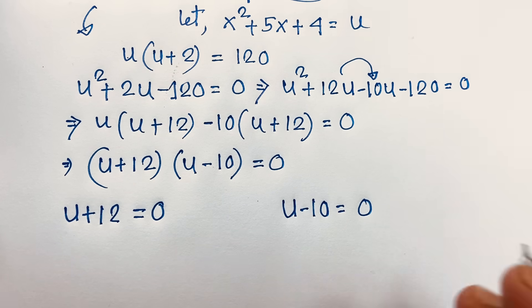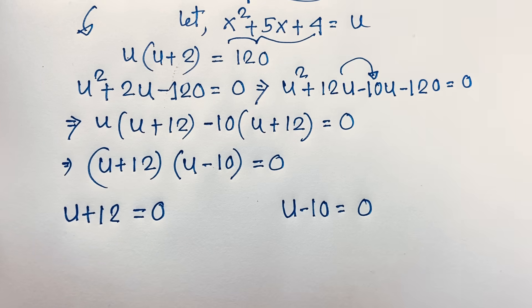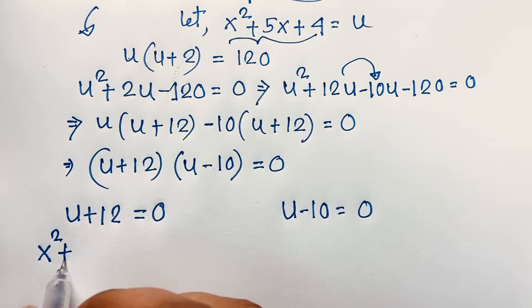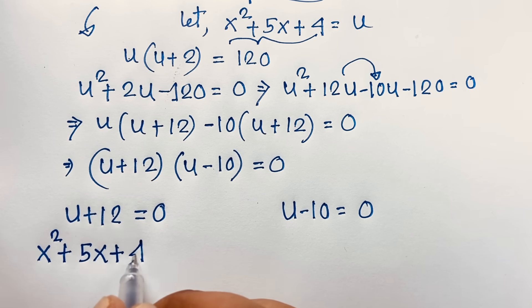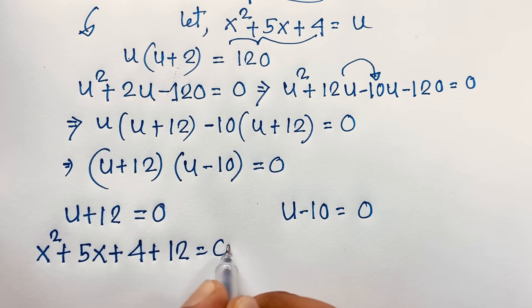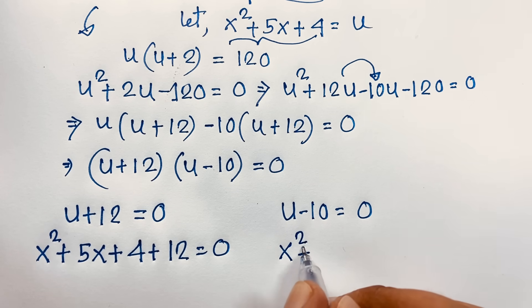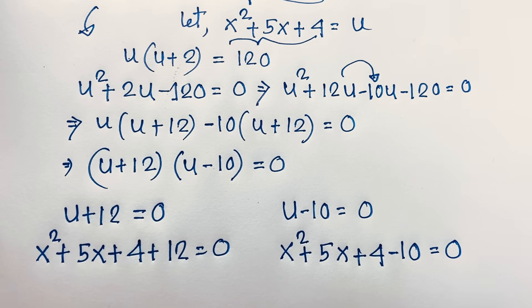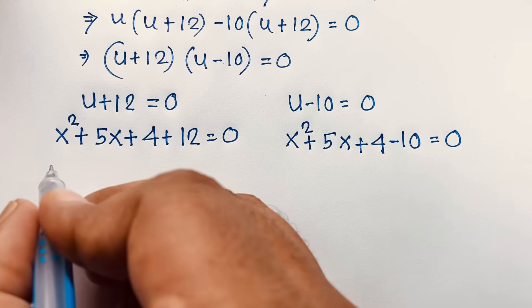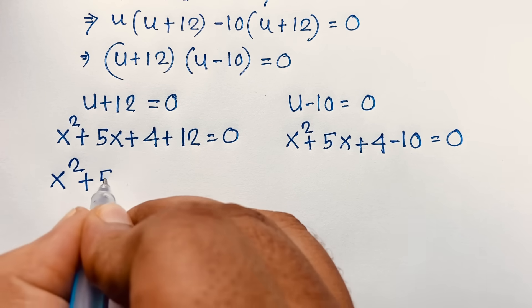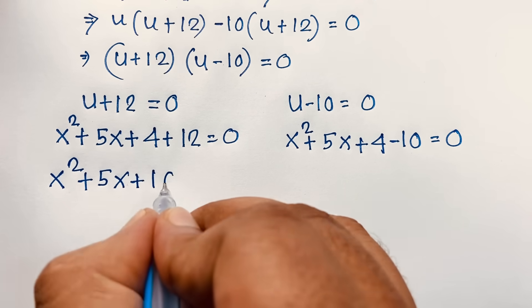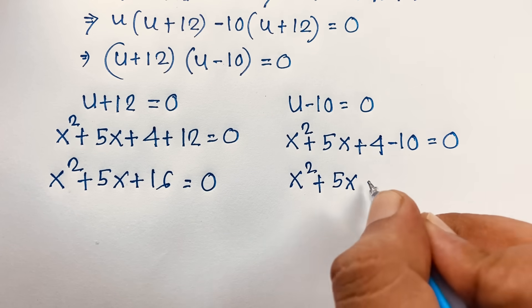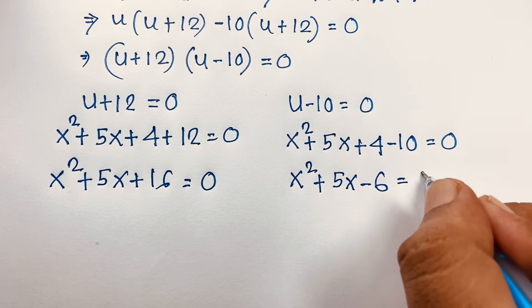Recalling that u = x² + 5x + 4, we substitute back. Case 1: x² + 5x + 4 + 12 = 0, giving x² + 5x + 16 = 0. Case 2: x² + 5x + 4 - 10 = 0, giving x² + 5x - 6 = 0.